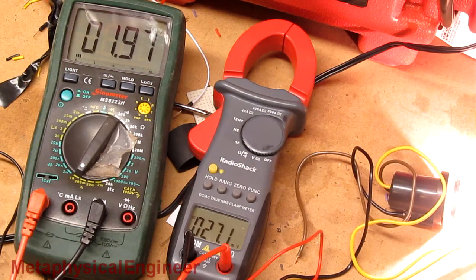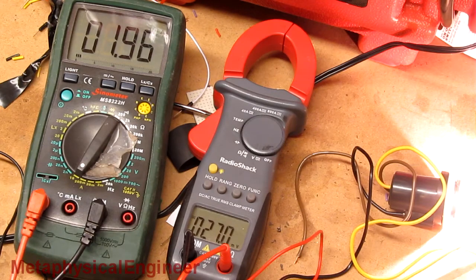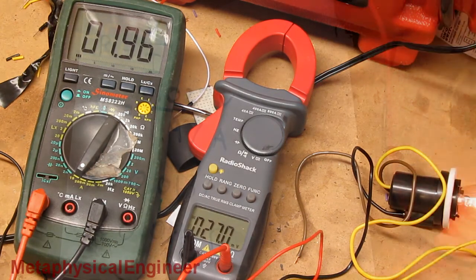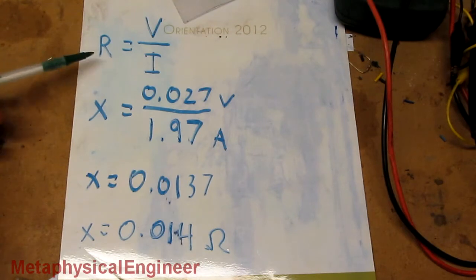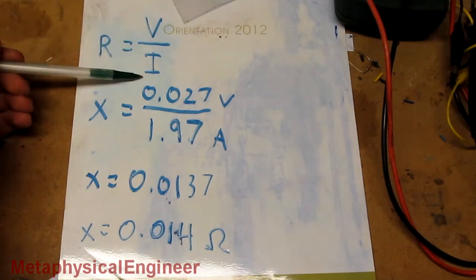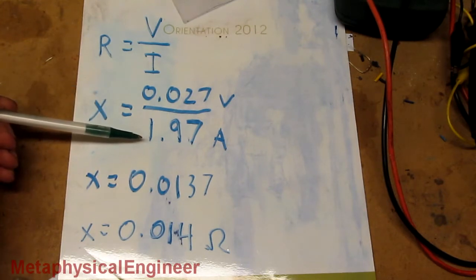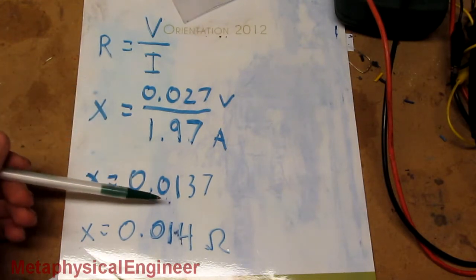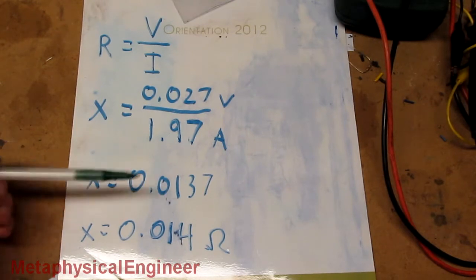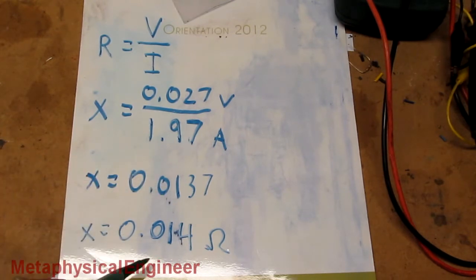Slightly less than 2 amps, and we're getting 27 millivolts. Ohm's law calculation, resistance equals voltage divided by current. We measure 27 millivolts, or 0.027 volts, and that's divided by 1.97 amps for 0.0137 ohms, or, corrected for sig figs, 0.014 ohms.